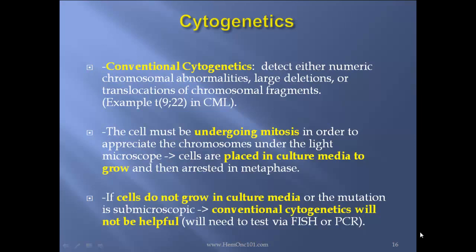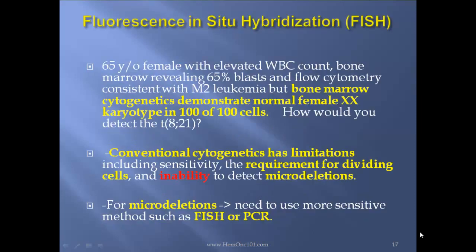That is why this is very difficult in myeloma, since plasma cells do not grow very well in media. If conventional cytogenetics are not helpful, then you must test via FISH or PCR. Case report: a 65-year-old female with elevated WBC count, bone marrow revealing 65% blasts, and flow consistent with M2 leukemia — but bone marrow cytogenetics demonstrates a normal female XX karyotype in 100 out of 100 cells. So how would you detect the translocation 8;21? Conventional cytogenetics has limitations including sensitivity, the requirement for dividing cells, and the inability to detect microdeletions. For microdeletions, you need to use much more sensitive methods such as PCR or FISH.